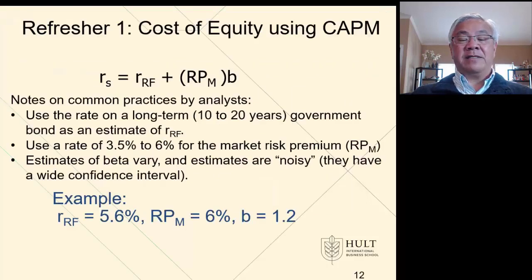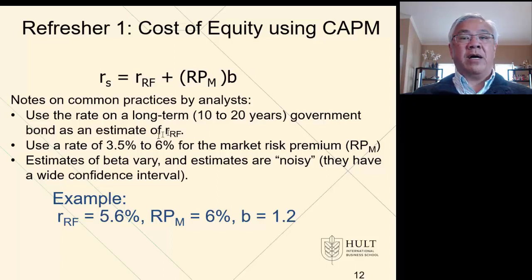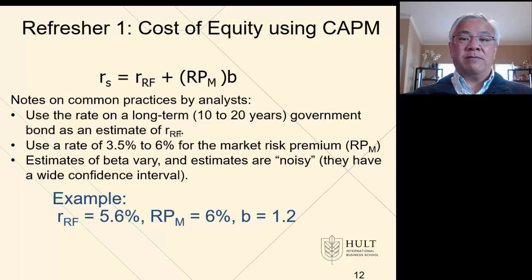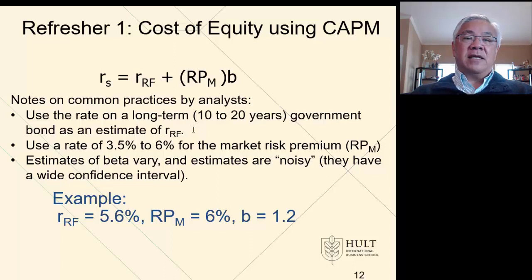First, CAPM — we've done this quite a few times. The formula is risk-free rate plus beta times the market risk premium. We use the long-term government bond for the risk-free rate, and we use a rate of 3.5% to 6% for the market risk premium, based on the time frame of the market analysis. Estimates for beta may vary, and you might see wide confidence intervals, but we take that as a risk of using this approximation method called CAPM.